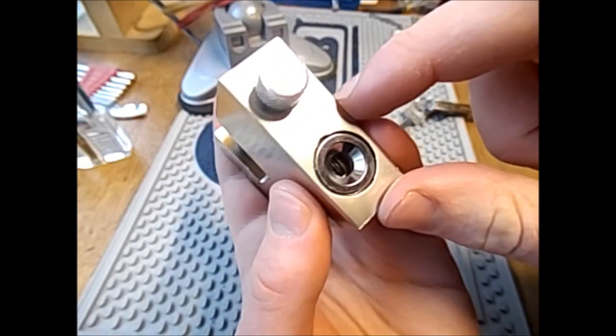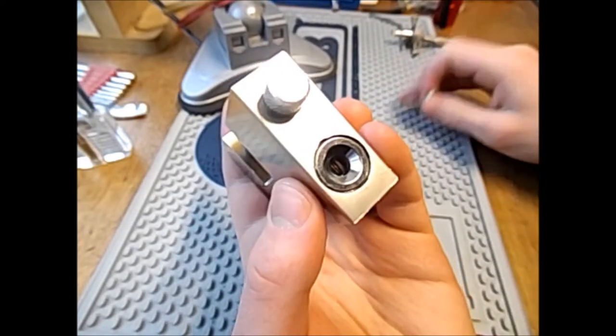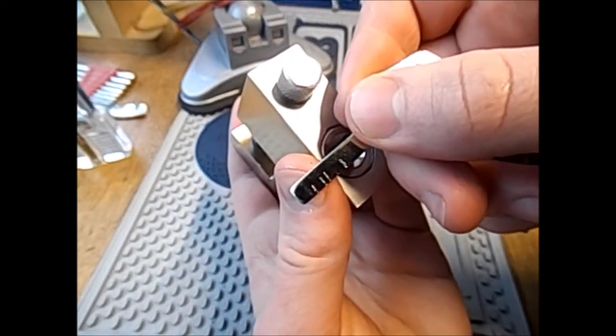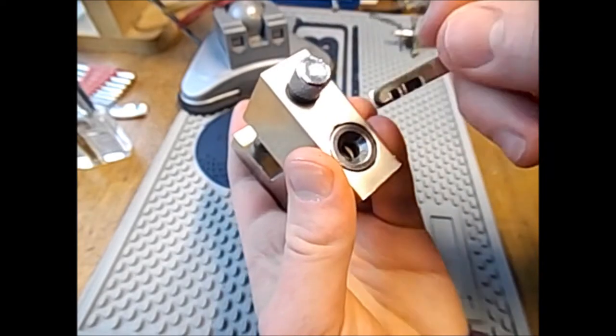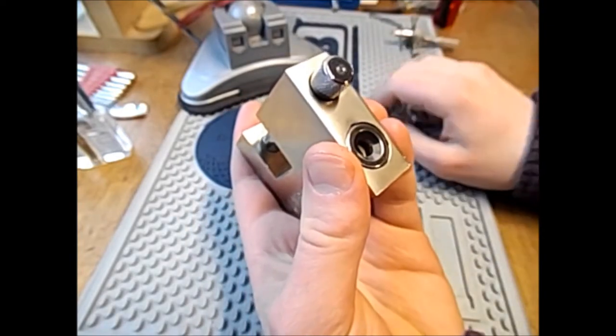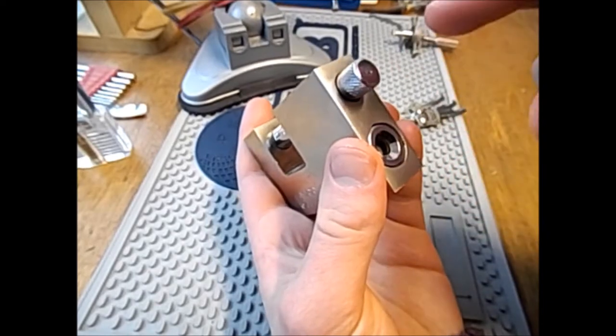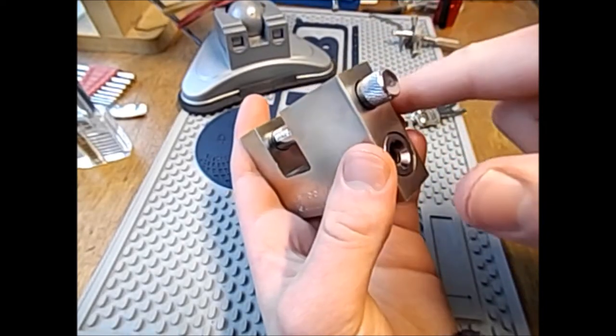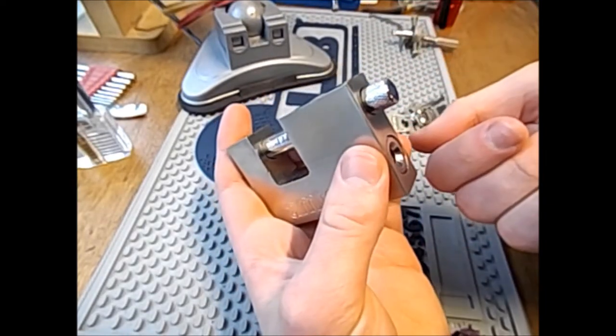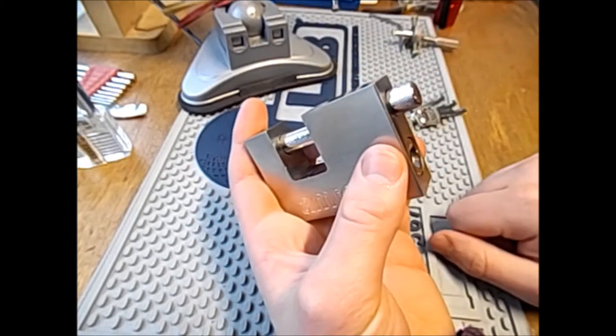All these disks have a groove cut in them, and when all these disks are rotated the correct amount, which is what happens when you insert the key, all the grooves will line up. A sidebar will fall in and you'll be able to turn the key fully and unlock the lock.